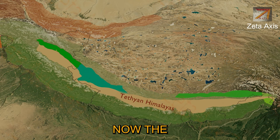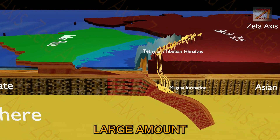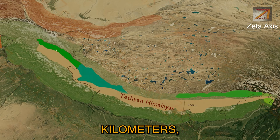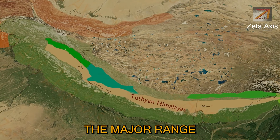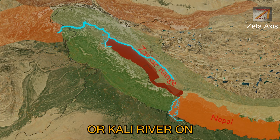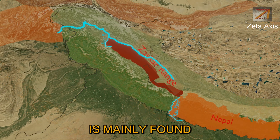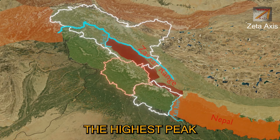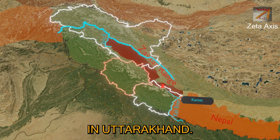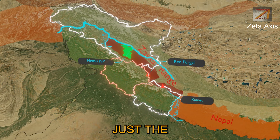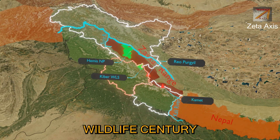The Tethian Himalayas, also called Tibetan Himalayas, were formed due to upliftment of the Tethys ocean floor. That is why we see a large amount of fossils and sedimentary rocks in these mountains. The average width of Tethian Himalayas is 100 km, making it the broadest zone of the Himalayas. The major range of Tethian Himalayas is the Zanskar range, which extends from the Suru river in Kargil to the Karnali river on the Indo-Nepal border. Zanskar range is mainly found in Ladakh Union Territory and Uttarakhand. The highest peak of Zanskar is Mount Kamet, located in Uttarakhand, while Mount Reo Purgyil is located on the Himachal-China border.